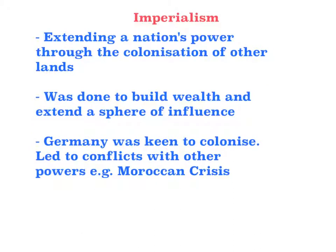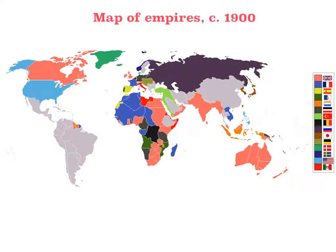Another major cause of the First World War was imperialism, done as an extension of a nation's power through colonisation of other foreign lands. This was often done to help build wealth through foreign labour and resources, as well as extending a nation's sphere of influence to help educate the supposedly uncivilised non-European nations. The hunt for world domination obviously led to a number of conflicts — one of these can be seen with the Moroccan crisis in 1906, when Germany intentionally undermined French control in Morocco to increase their sphere of influence and improve their financial interests in the region. Here is a map of the empires at the turn of the century, showing Britain's broad sphere of influence compared to Germany's more limited one in Africa.